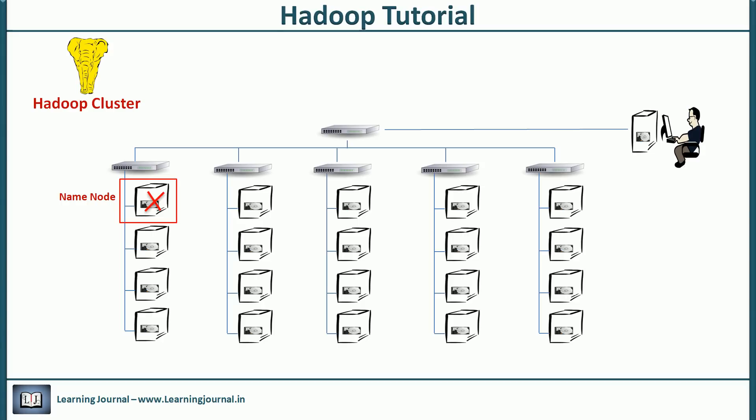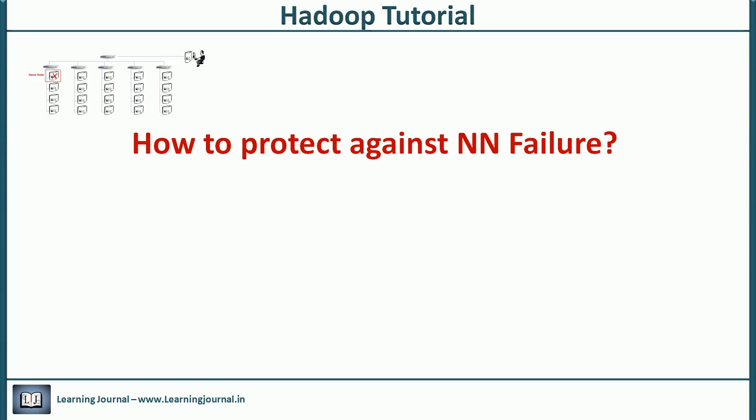What happens when the name node fails? We already learned that name node maintains the file system namespace. Name node is the only machine in Hadoop cluster that knows the list of directories and files. It also manages the file to block mapping. Every client interaction starts with name node. So if name node fails, we cannot use Hadoop cluster. We cannot read or write anything to the cluster. So the name node is a single point of failure in Hadoop cluster.